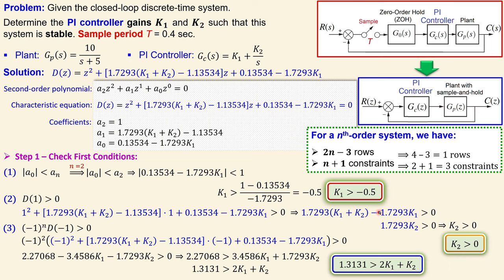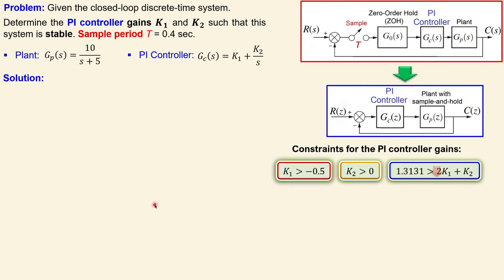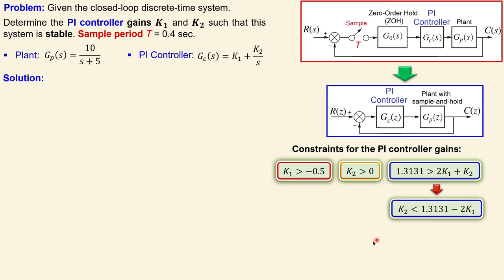To make the third condition more precise, we rewrite it in a useful form: k2 must be smaller than 1.3131 minus 2*k1. This means if we choose a value of k1 satisfying condition one, we can determine the maximum allowed k2 from this expression. We need to verify all three conditions are simultaneously satisfied.